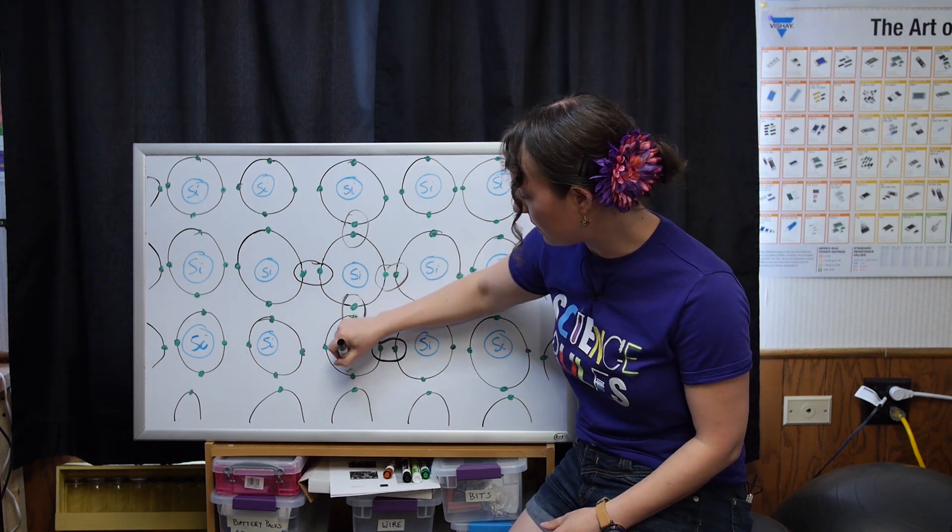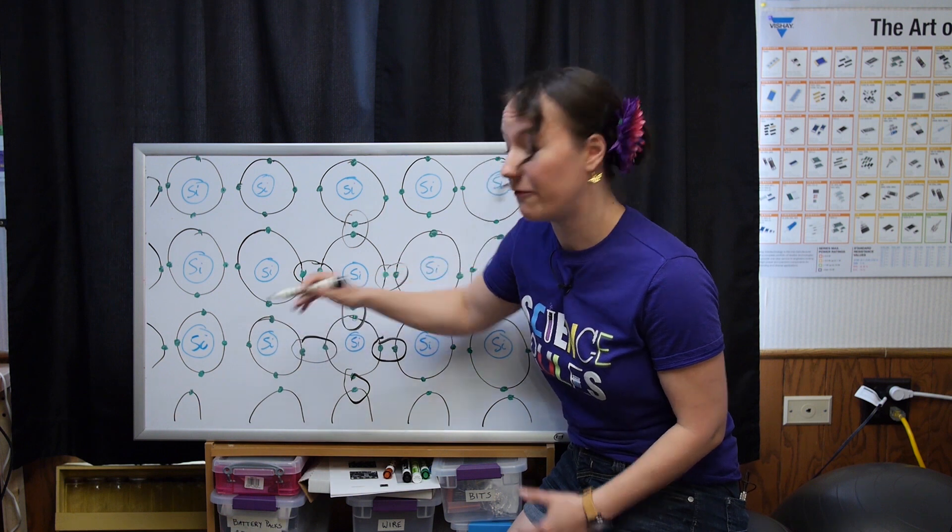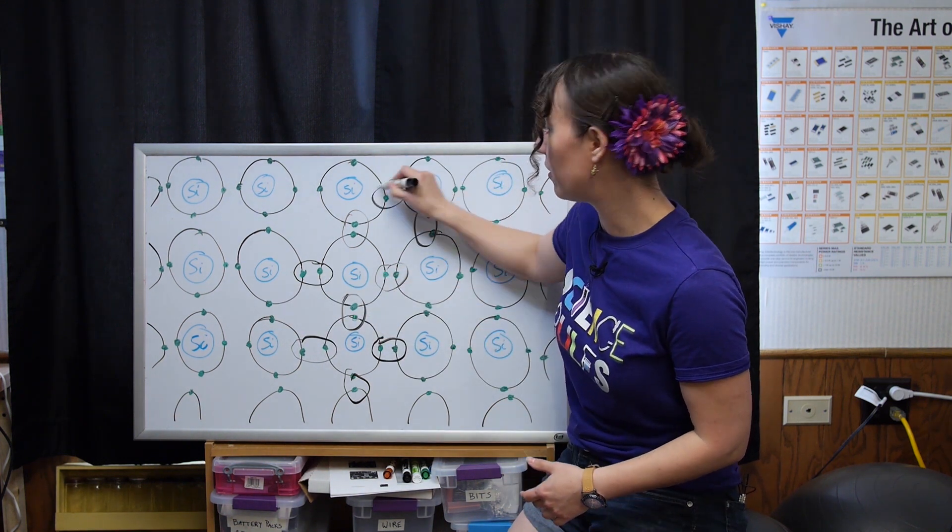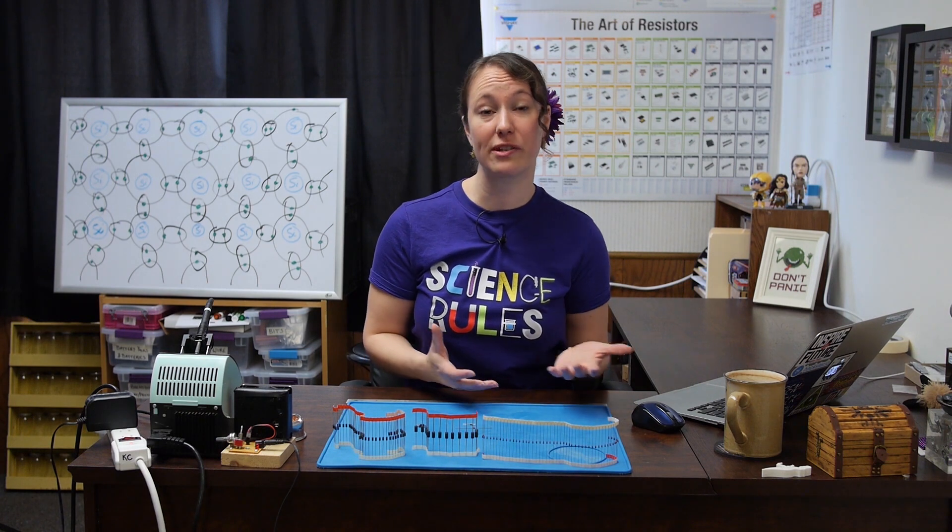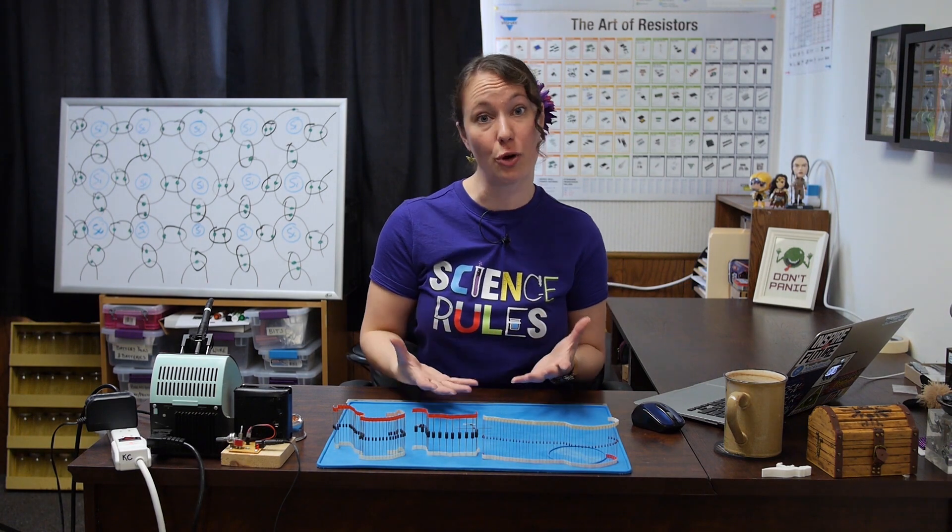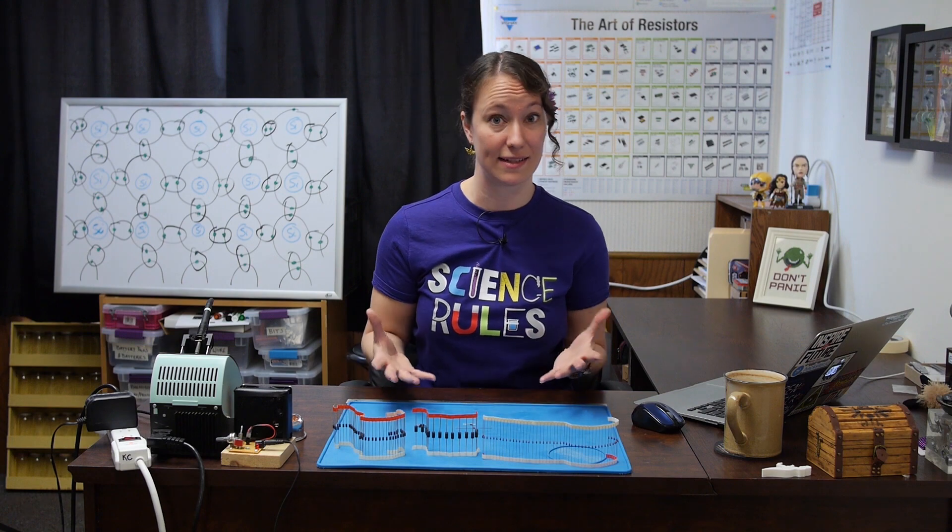Now, all of these atoms will do this. This forms a very strong structure called a crystal, or a lattice. To make diodes do what they do, this structure is manipulated through a process called doping, where another element is added to the silicon.